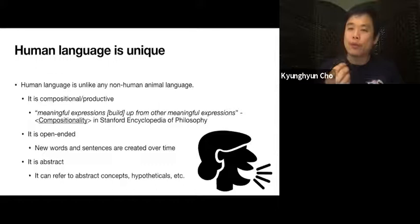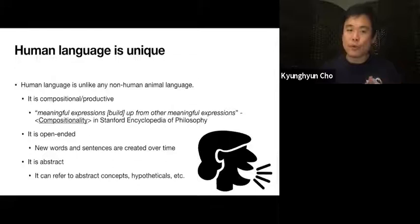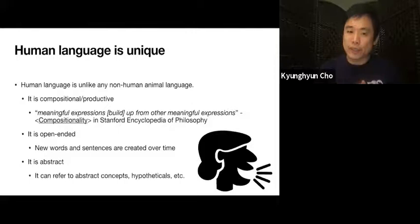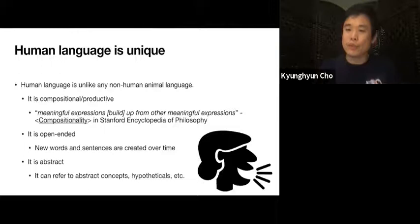There are a number of things that set our language apart from all the other forms of communication. The first is that it is compositional, or in other words, productive. According to the compositionality section in the Stanford Encyclopedia of Philosophy, it says that language is compositional if meaningful expressions build up from other meaningful expressions. And this allows us to effectively produce an infinite variety of things we can express using language.